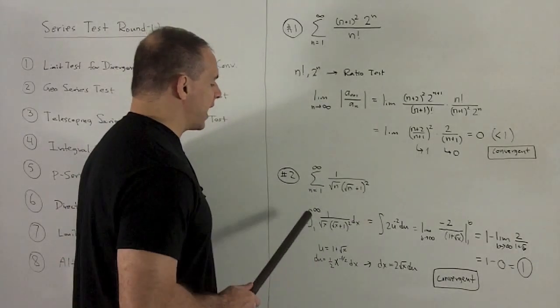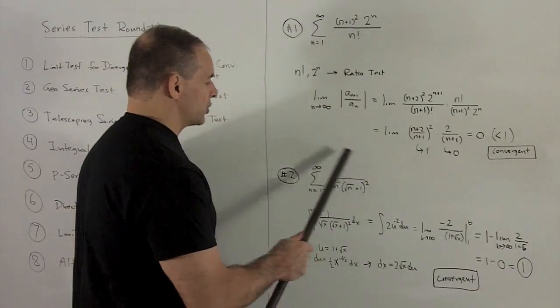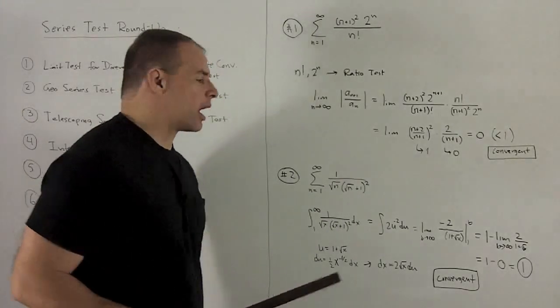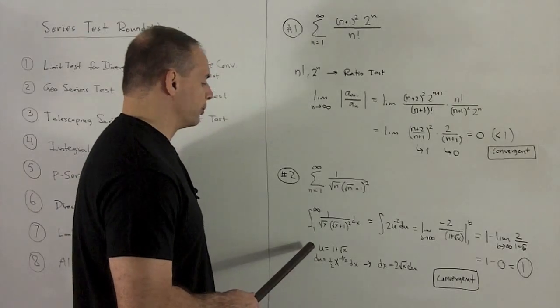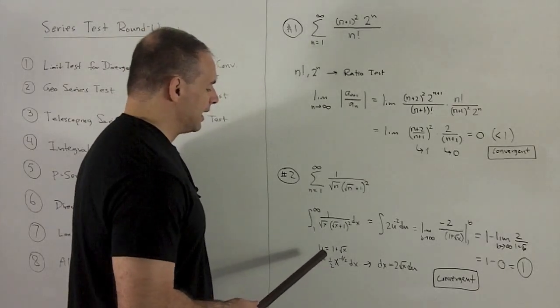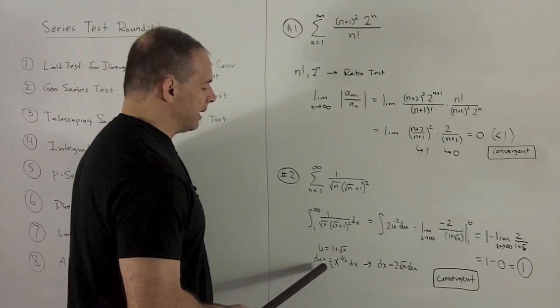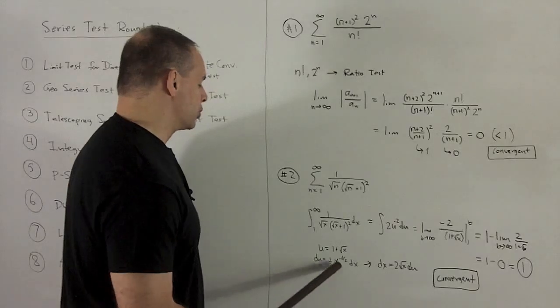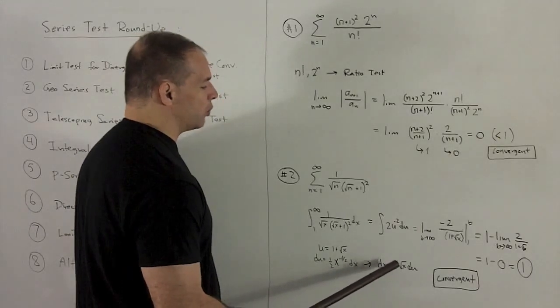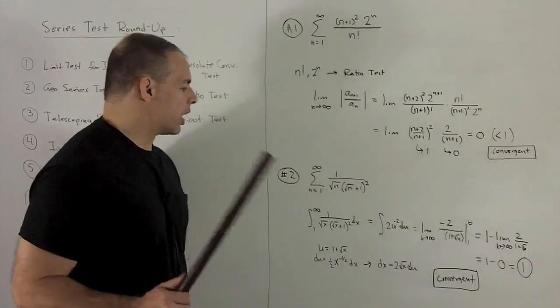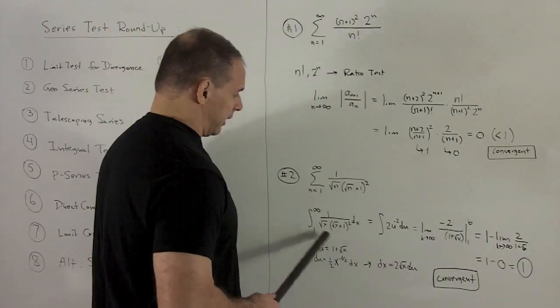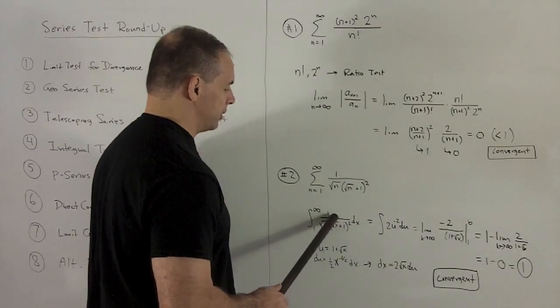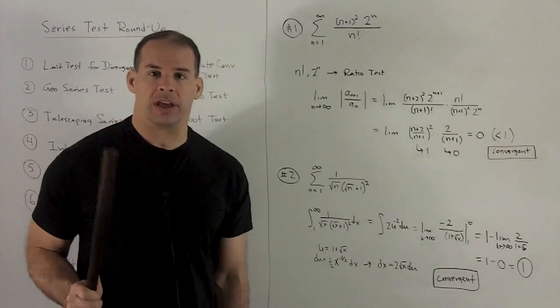So integral test is going to say we take our integral from 1 to infinity, take this quantity, and wherever I have an n, I put an x dx. By my little gymnastics there, I'm convinced I can do this by substitution. So u = 1 + √x. √x is x^(1/2), so du is going to be equal to (1/2)x^(-1/2) dx. I push all this stuff to the other side, it's going to be dx = 2√x du. So when I put everything in, we're going to be left with 2u^(-2) du. Minus 2 because I want to push this u² in the bottom to the top so we can do the integral fine.